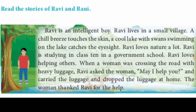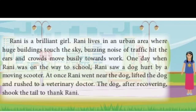Ravi is studying in class 10 in a government school. Ravi loves helping others. When a woman was crossing the road with heavy luggage, Ravi asked the woman, 'May I help you?' And carried the luggage and dropped it at home. The woman thanked Ravi for the help. Next story — Rani. Rani is a brilliant girl. Rani lives in an urban area where huge buildings touch the sky. Buzzing noise of traffic hits the ears and crowds move busily towards work. One day, when Rani was on the way to school, Rani saw a dog hurt by a moving scooter. At once, Rani went near the dog, lifted the dog, and rushed to a veterinary doctor. The dog, after recovering, shook its tail to thank Rani.